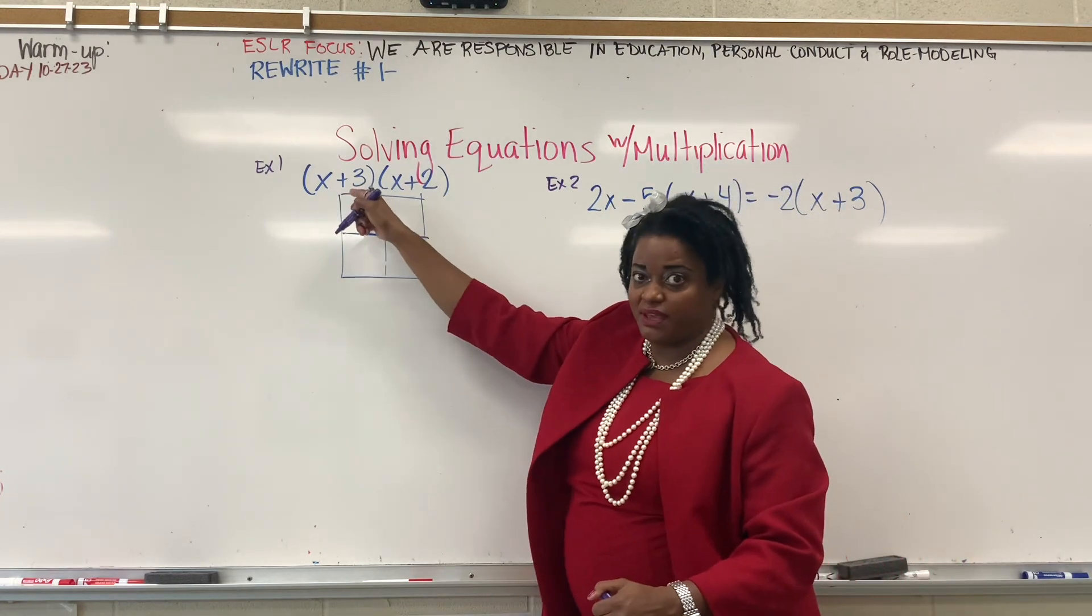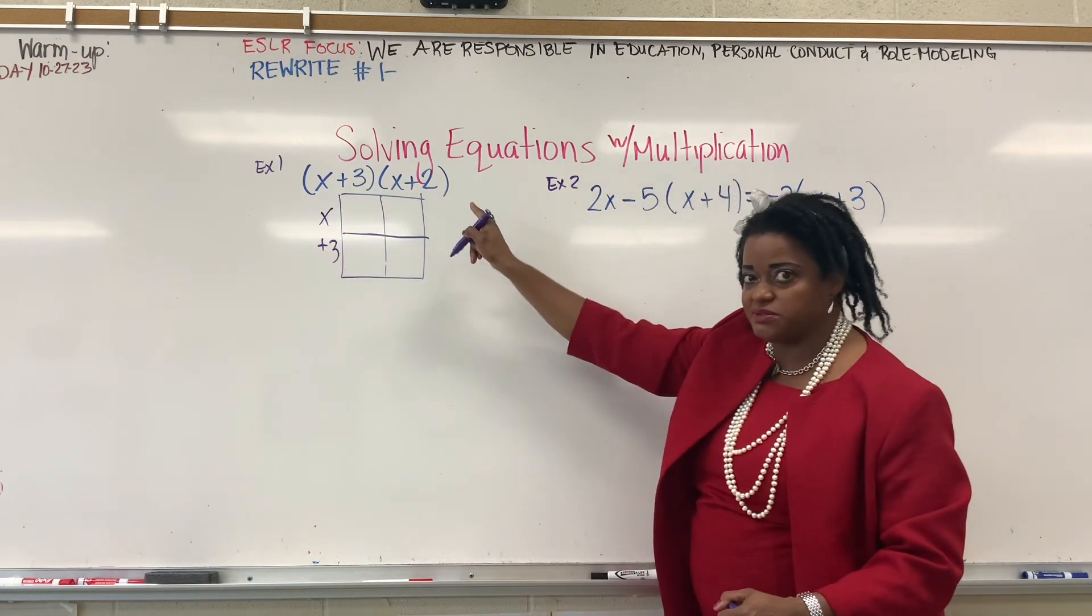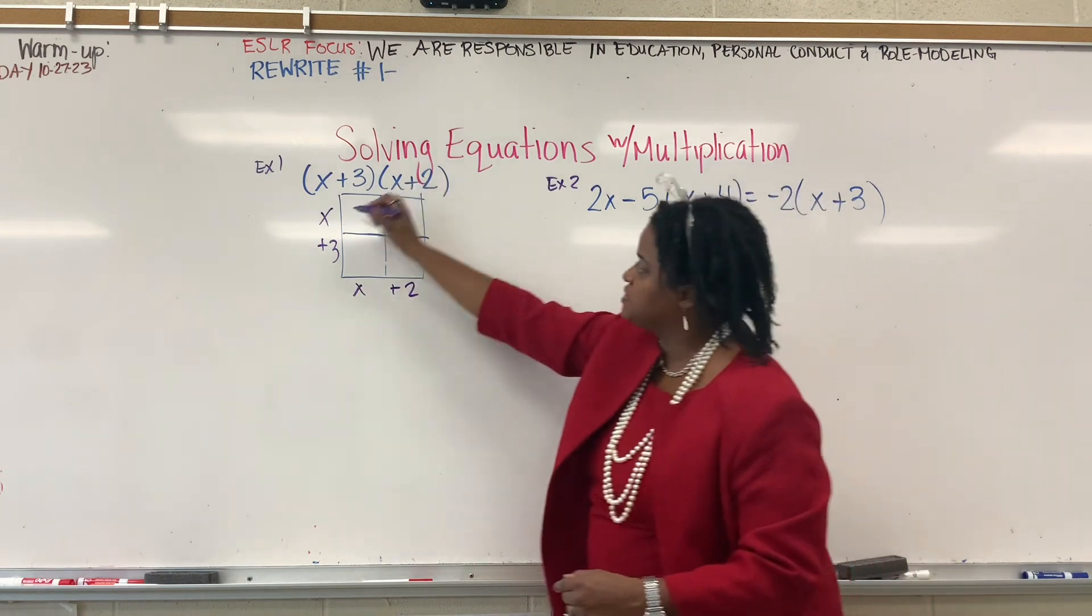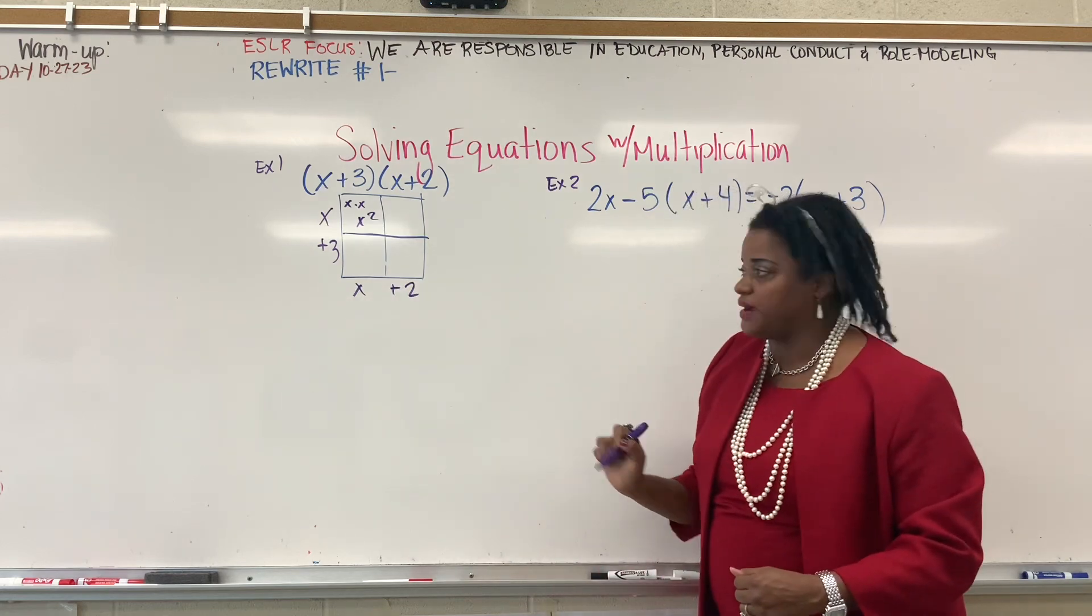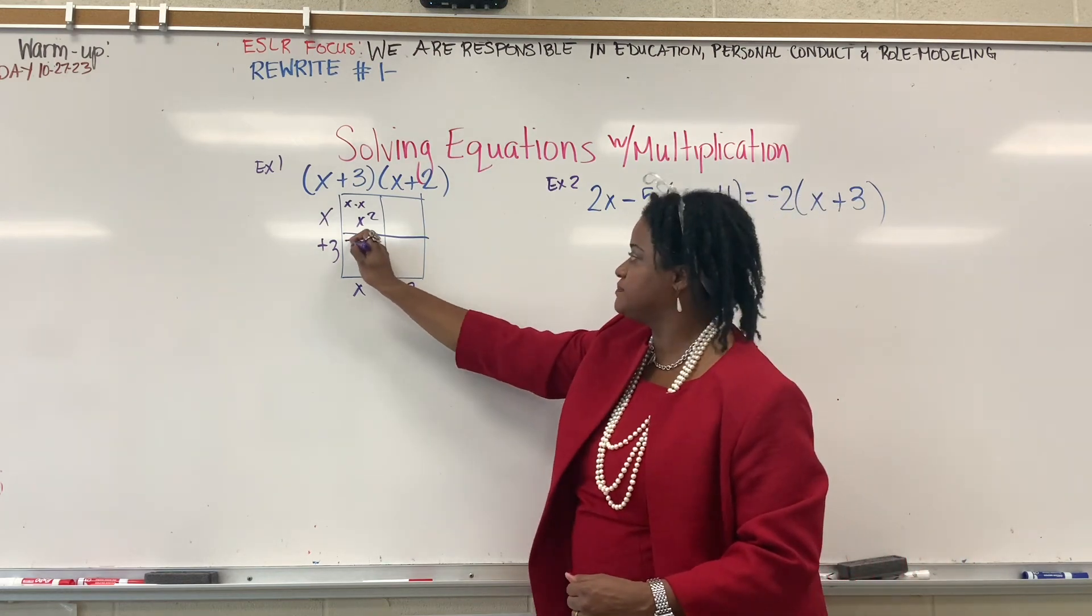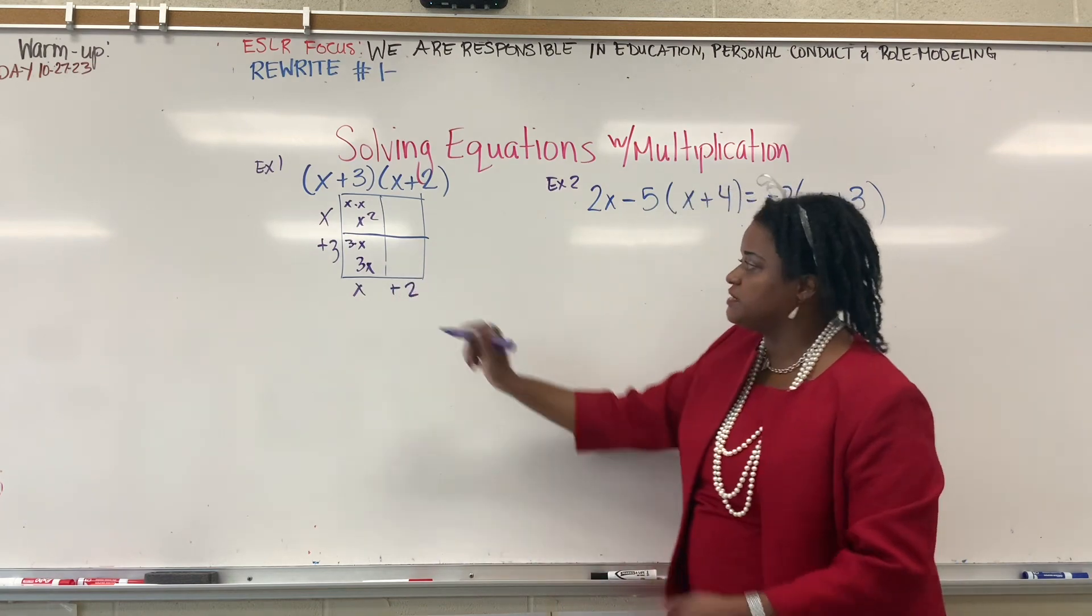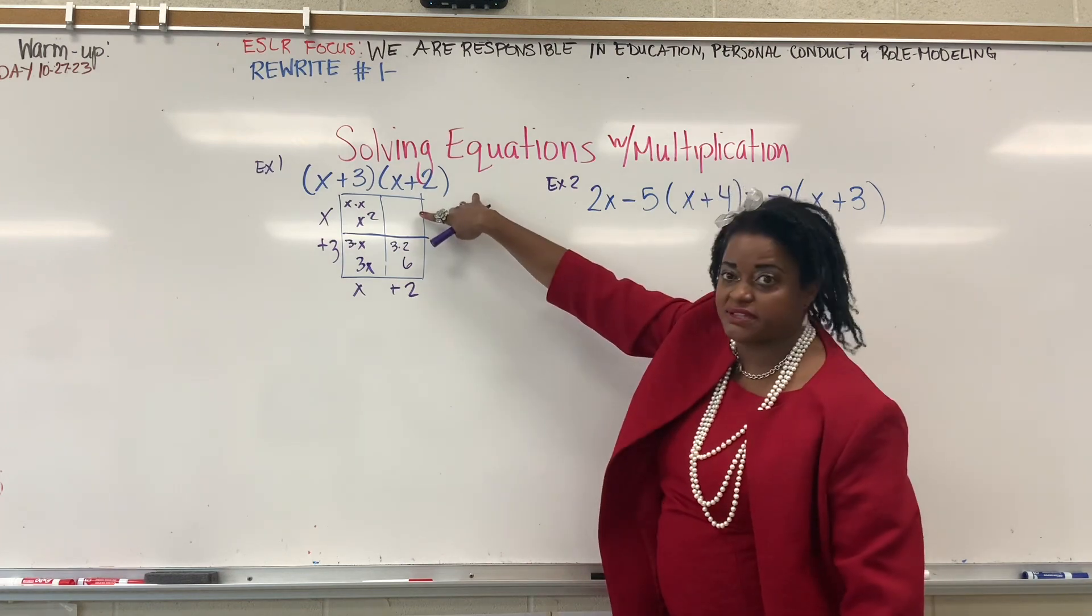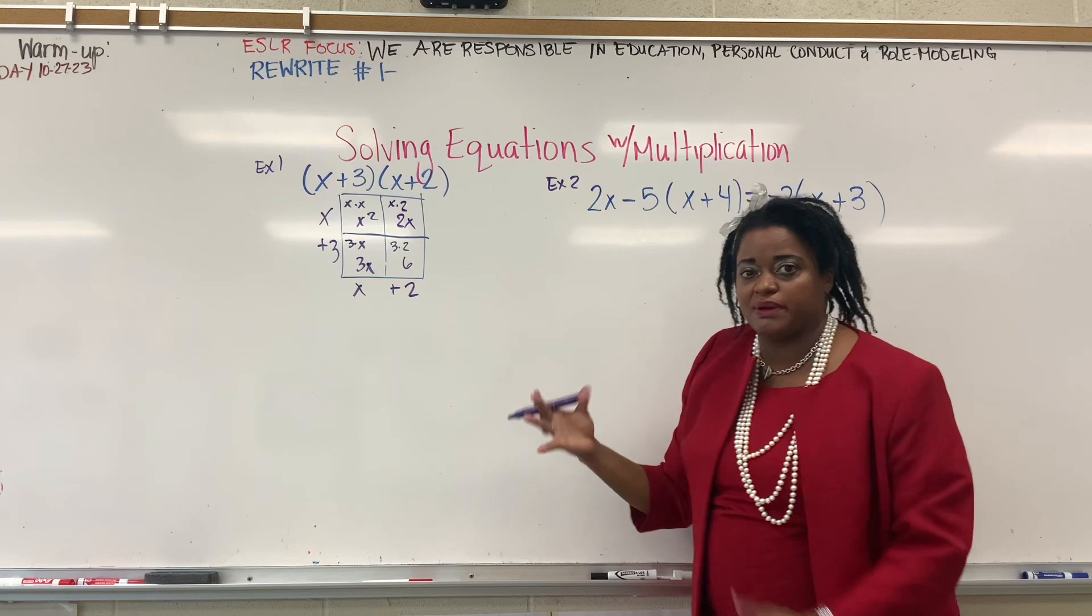So, x plus 3 is our length, and x plus 2 is our width, and we're going to multiply. Here's x times x, we get x squared. Here is 3 times x, we get 3x. Here is 3 times 2, that's 6, and here is x times 2, that's 2x.